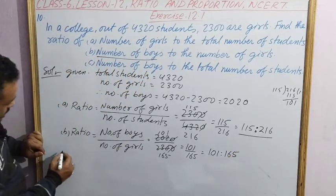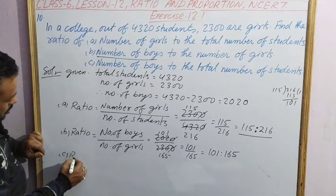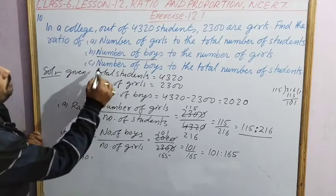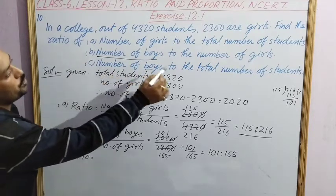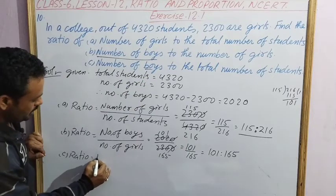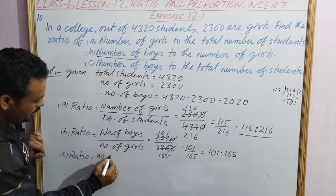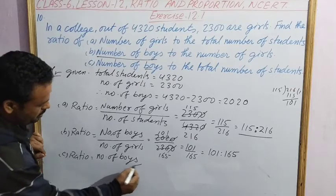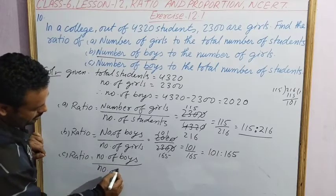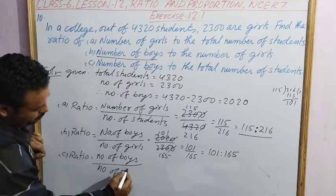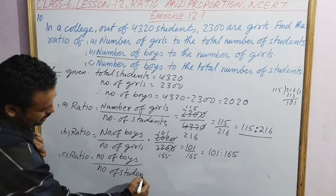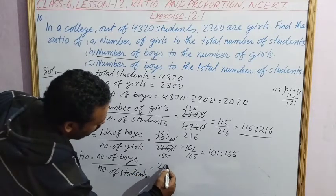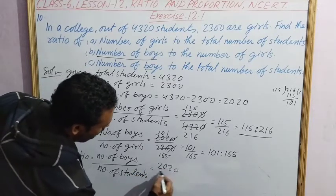The last ratio is between number of boys to number of students. Number of boys by number of students: 2020 by 4320.